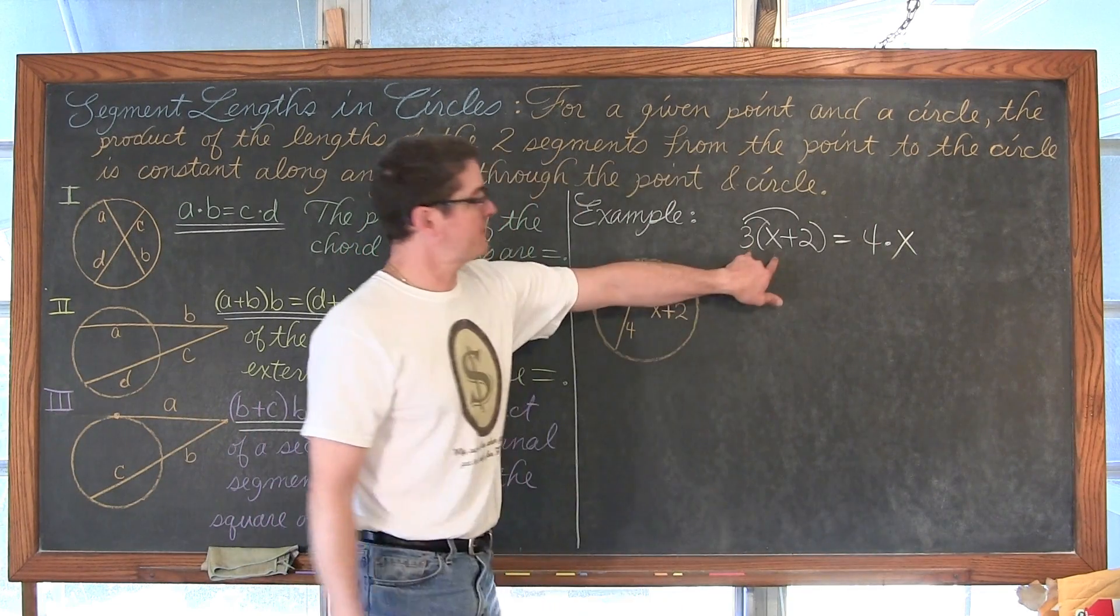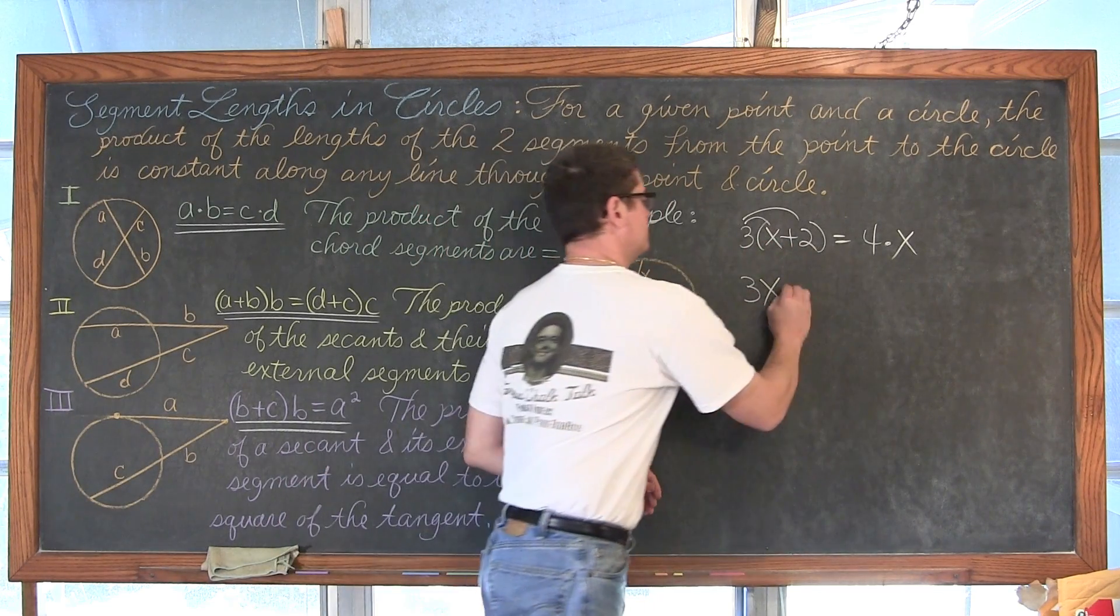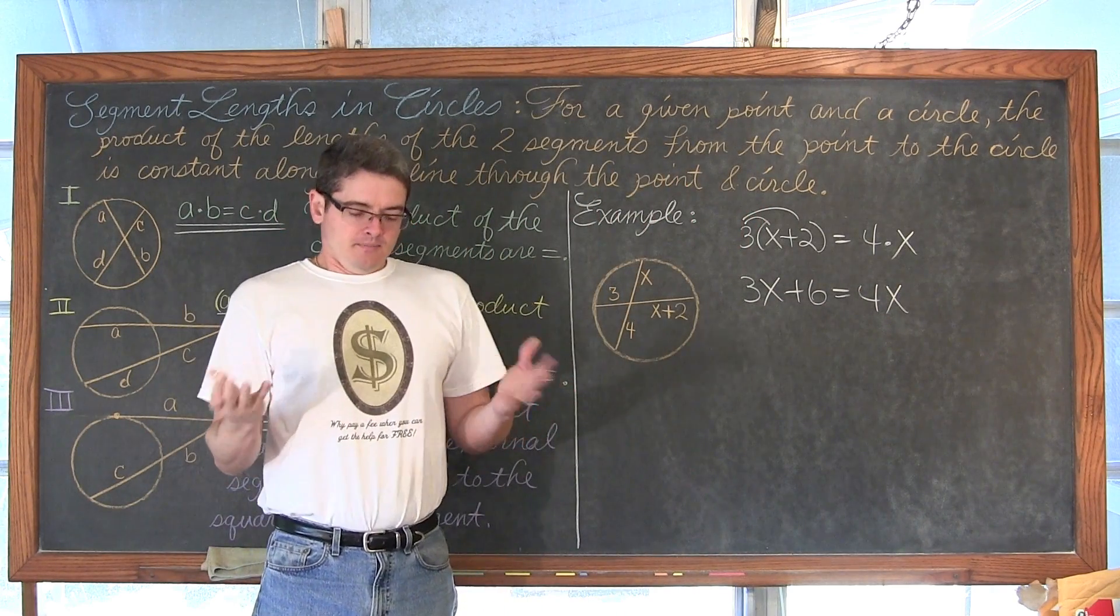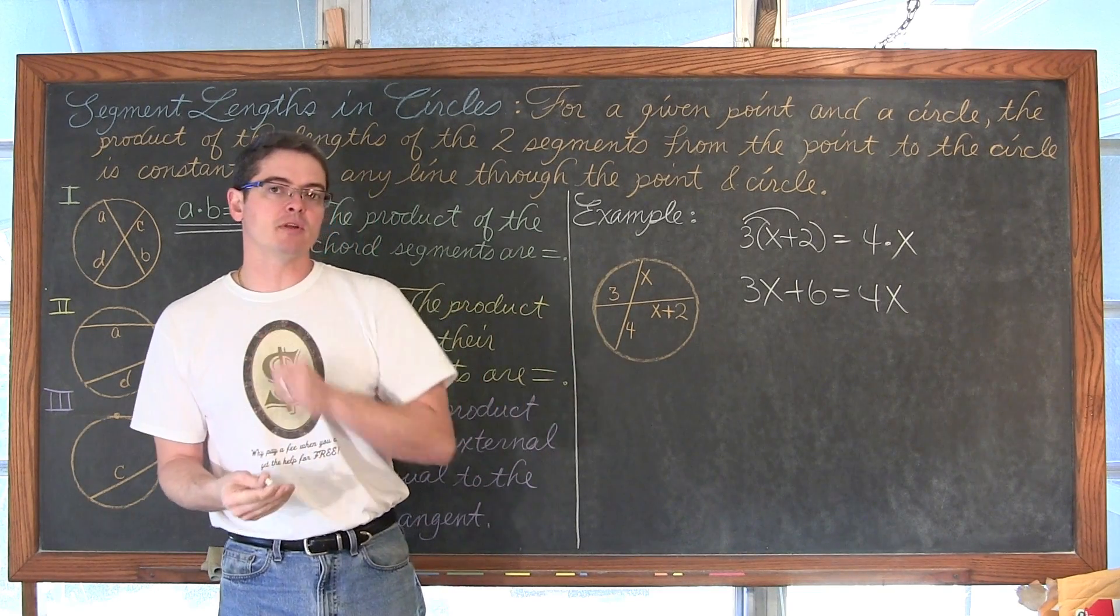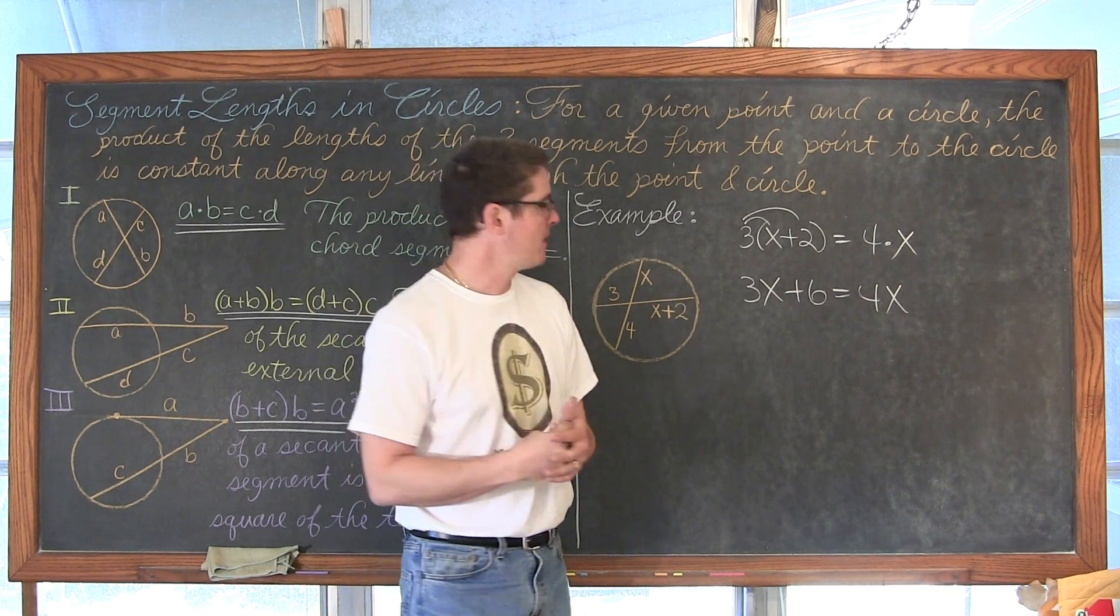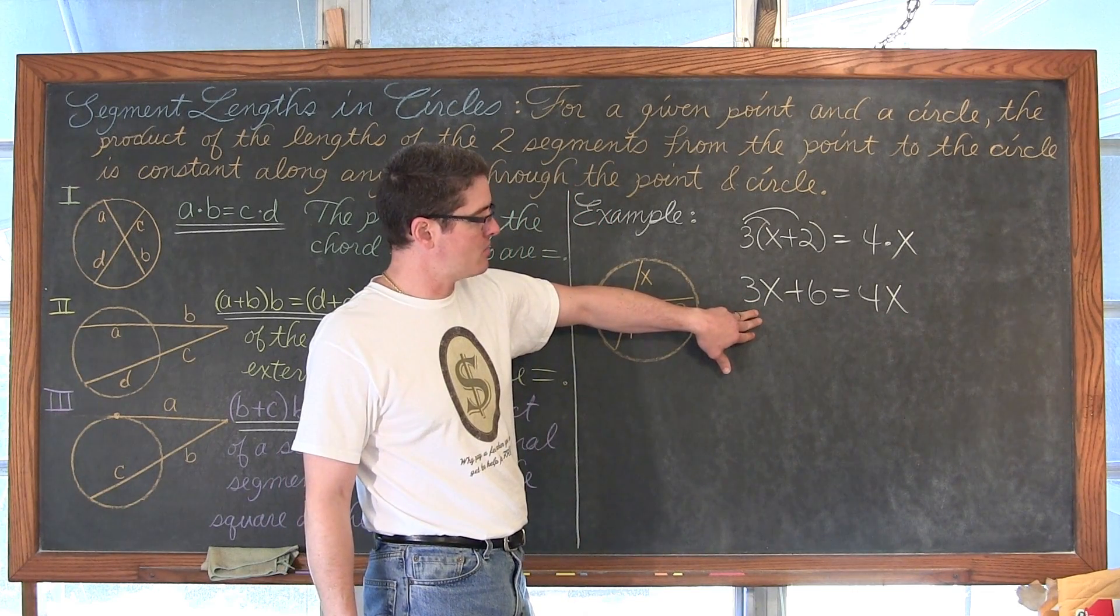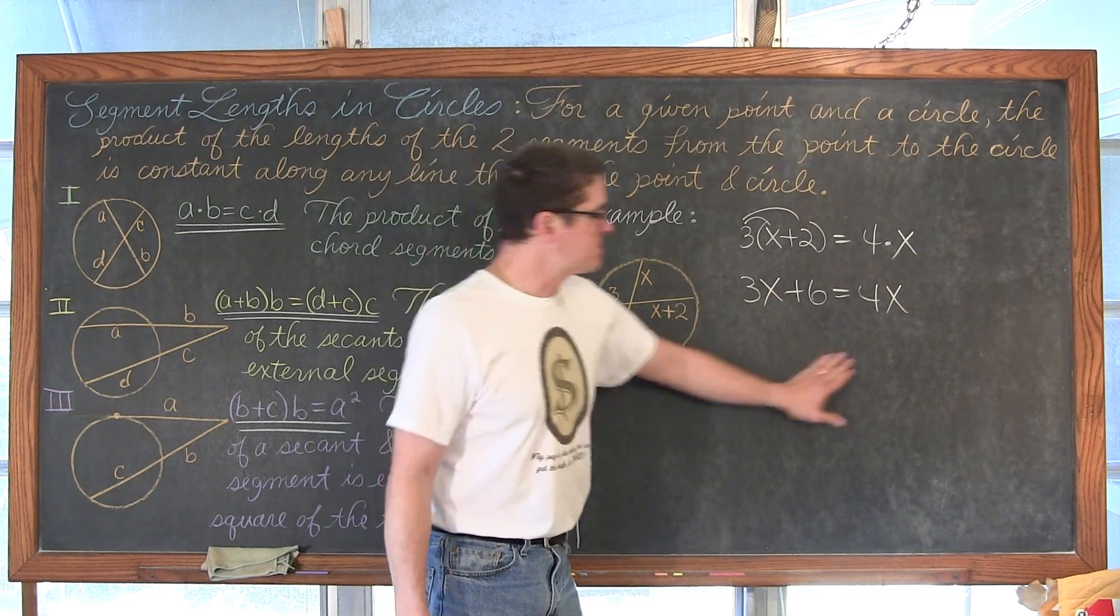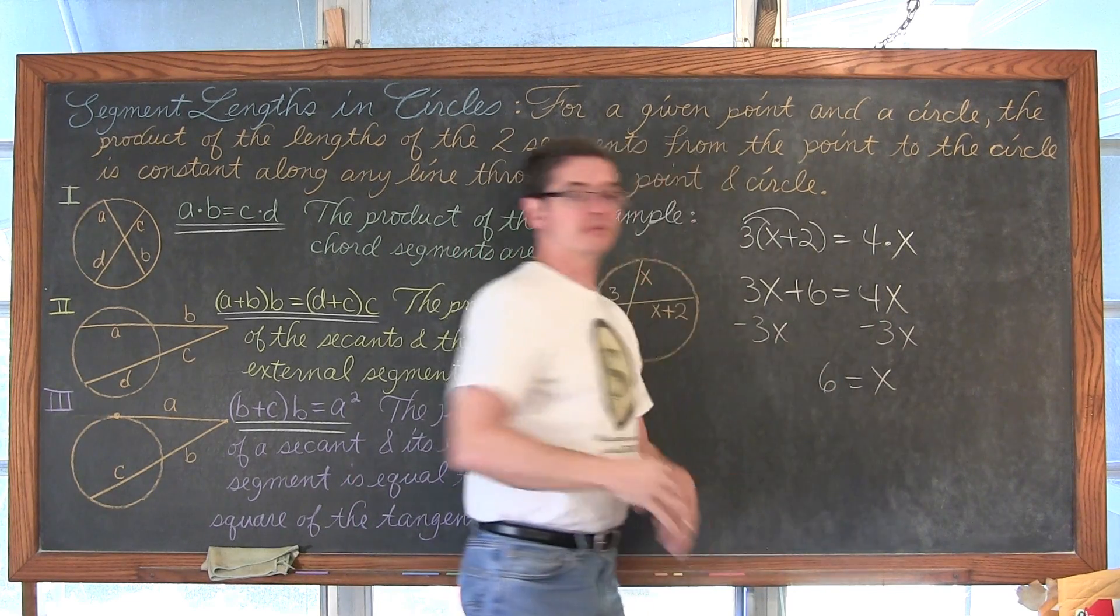So we've got 3 times x, which is 3x. We have 3 times 2, which is 6. We've got 4x. Now, a lot of students, especially if you're just learning algebra, like to always have that variable on the left-hand side. It really doesn't matter what side of the equation your variable is on as long as all your algebraic steps are correct. If you're used to always moving your variables to the left here, then you're going to have nothing left on the right-hand side of the equation. Honestly, I would just subtract both sides by 3x and get 6 is equal to x and that's done. That's the answer.